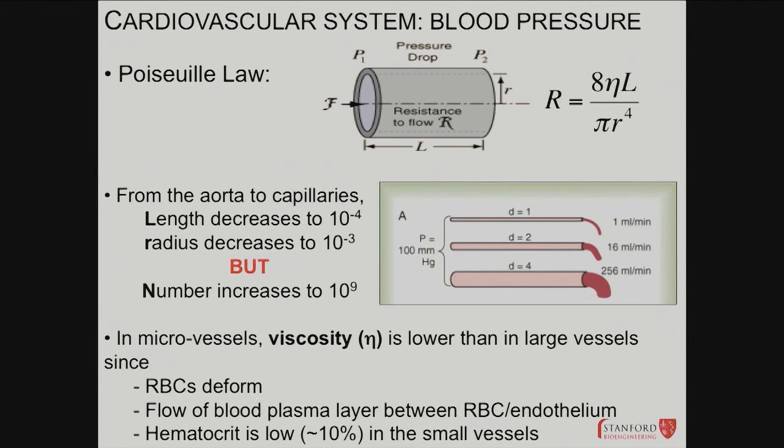Regarding Poiseuille's law: resistance is proportional to length and inversely proportional to radius to the fourth power — so smaller radius means higher resistance, and longer length means higher resistance. The enormous number of capillaries (10⁹ to 10¹²) explains their low net resistance. Viscosity arises from red blood cells deforming and other proteins in the blood.